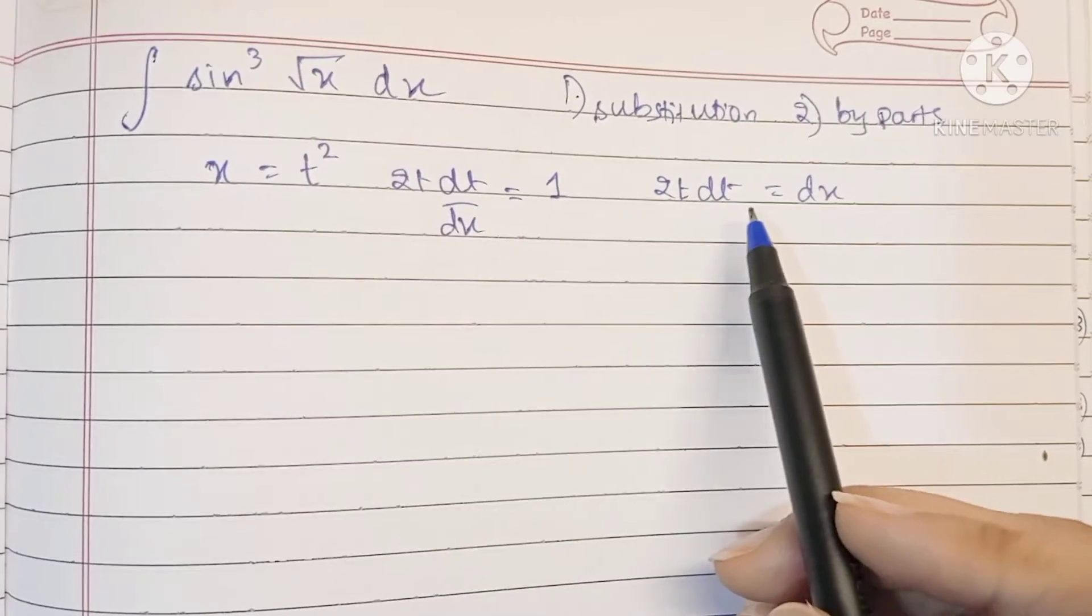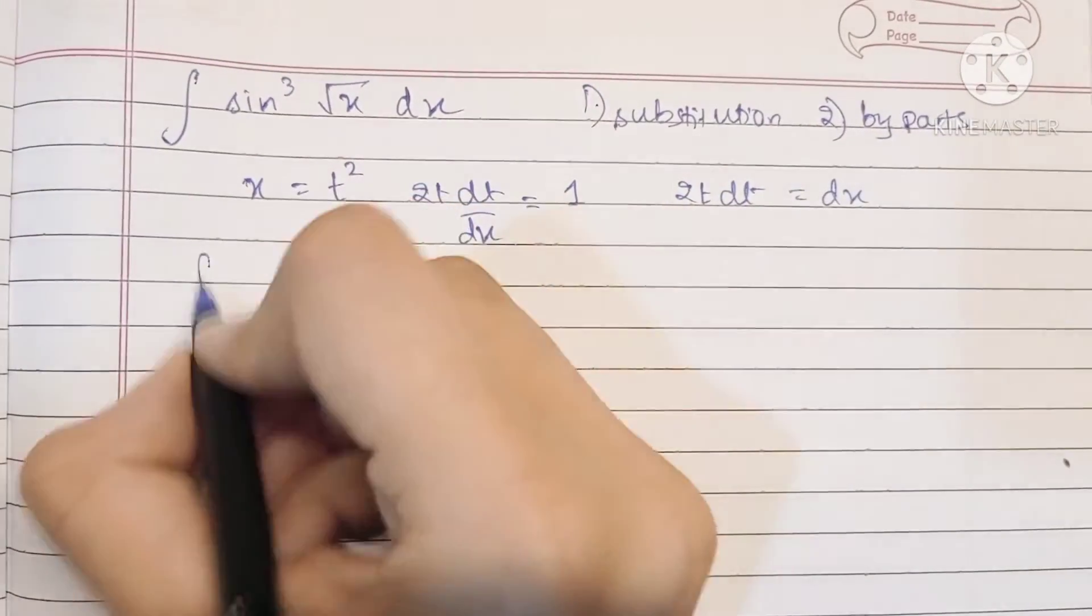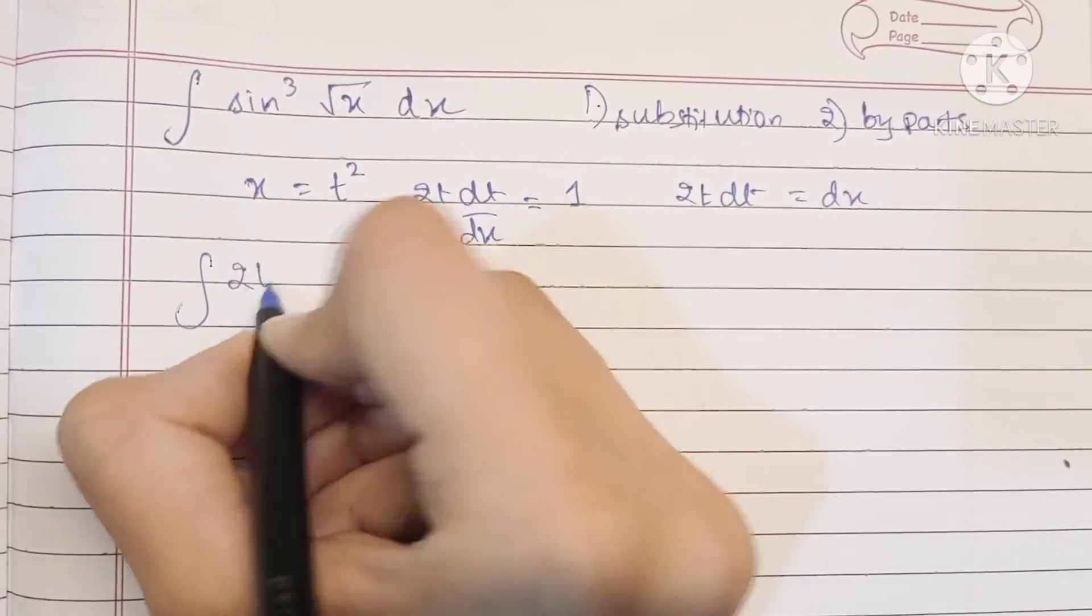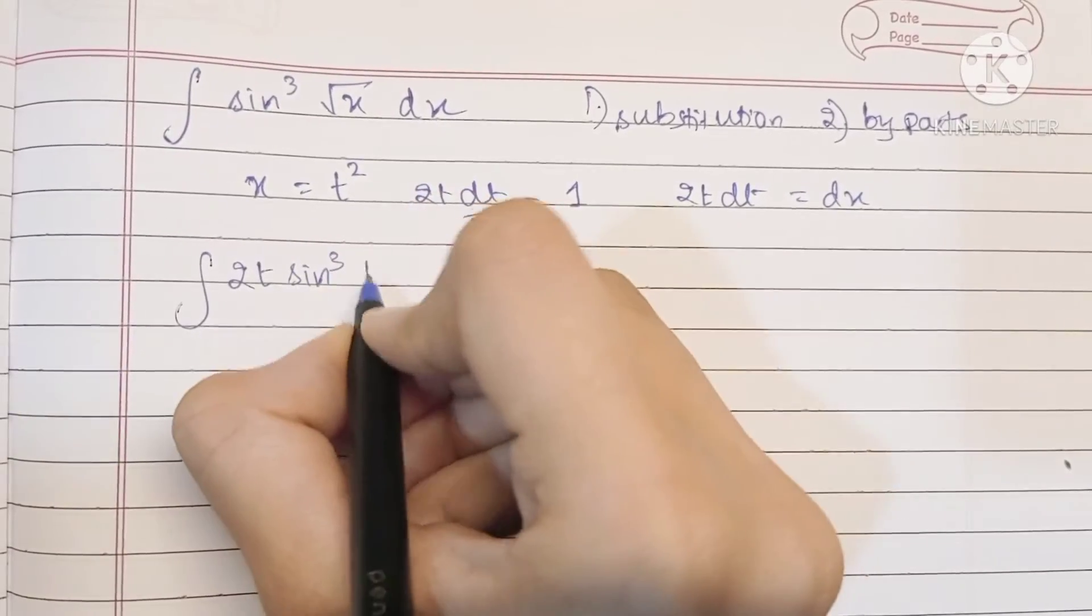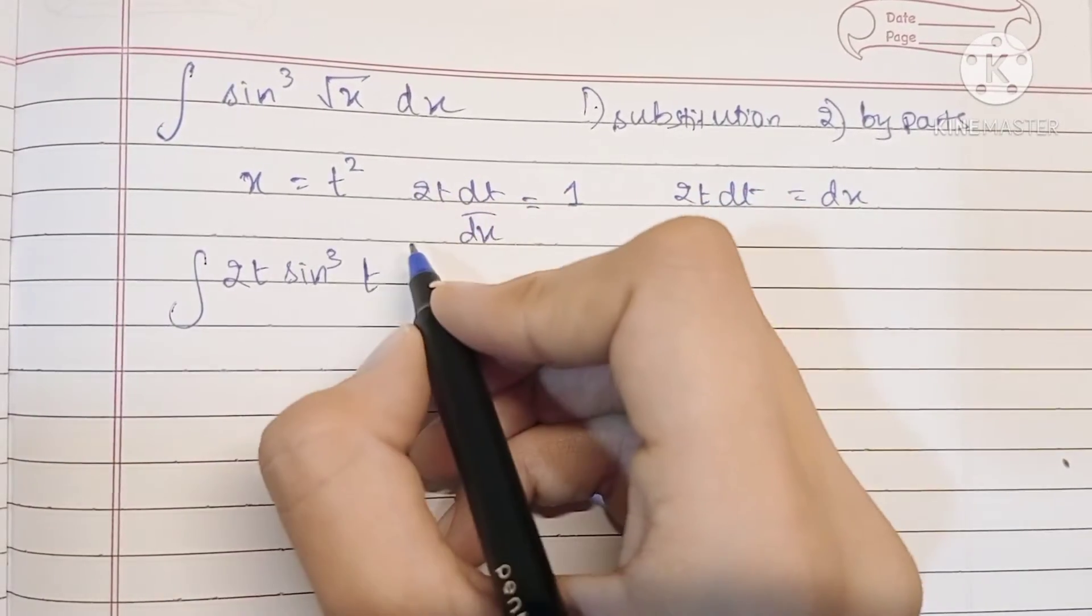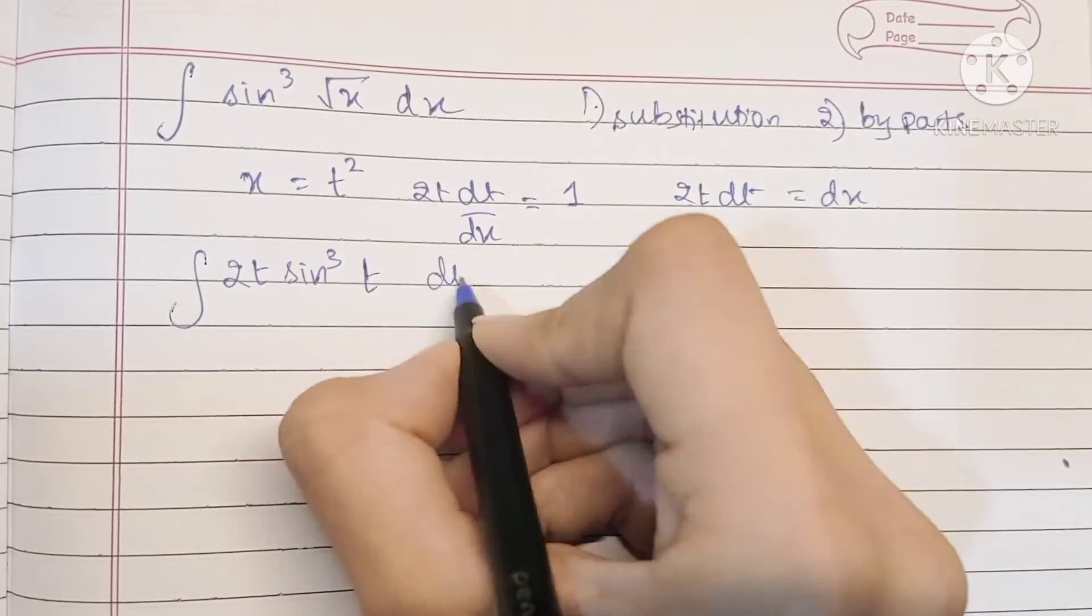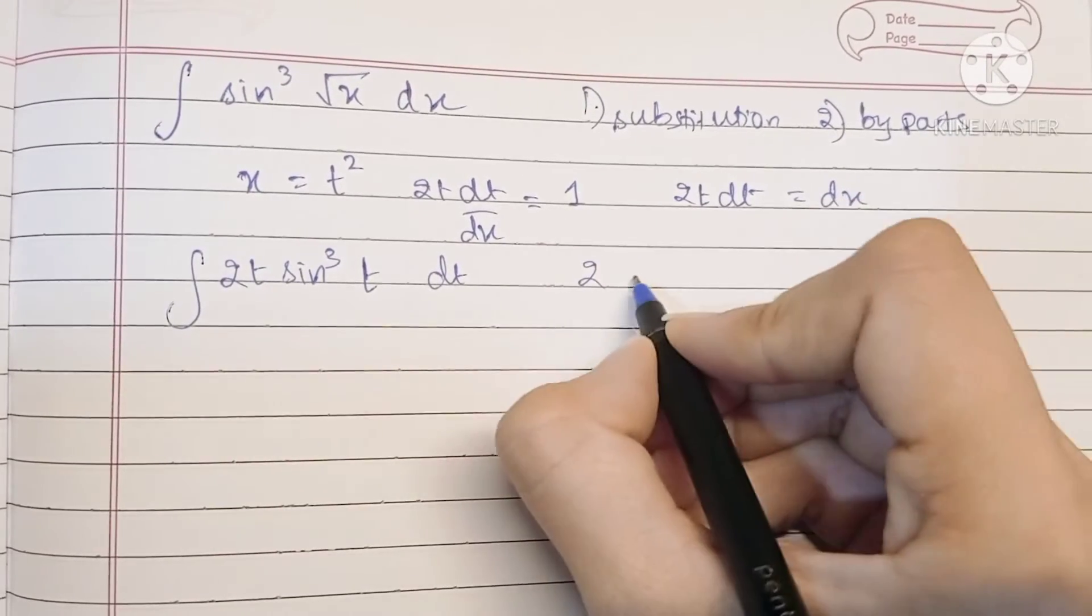So we replace this in the integral. We have 2t sine cube t, because x is t squared, so this becomes t. Root x becomes t dt, and we will take 2 outside because it's a constant.